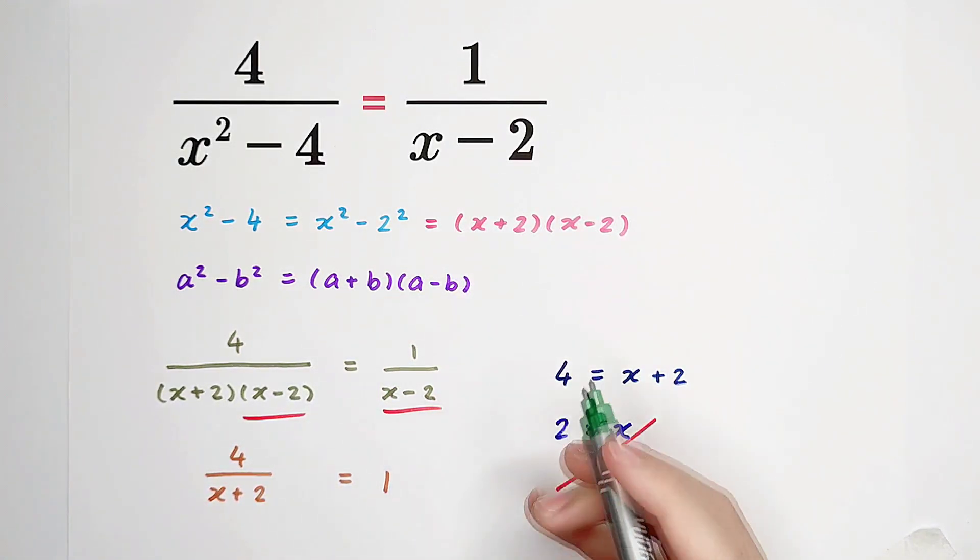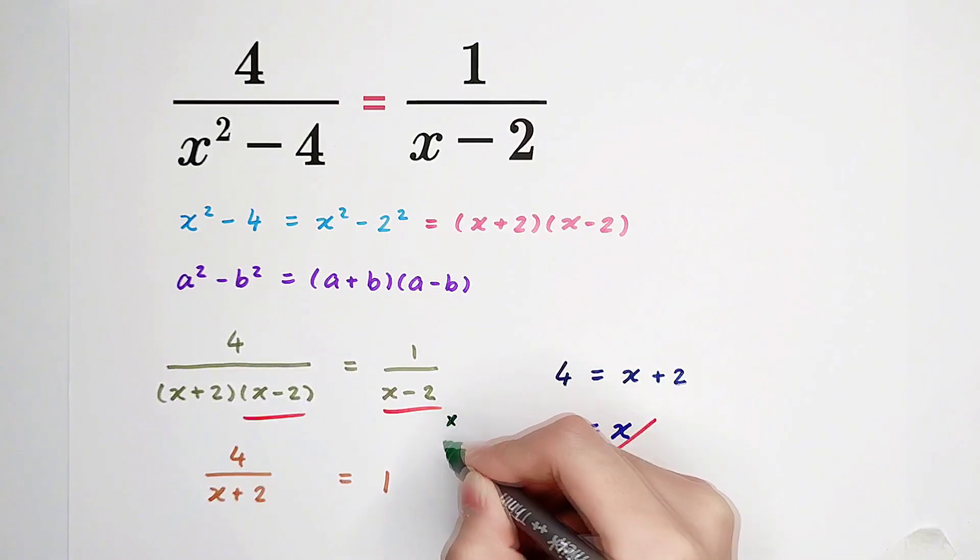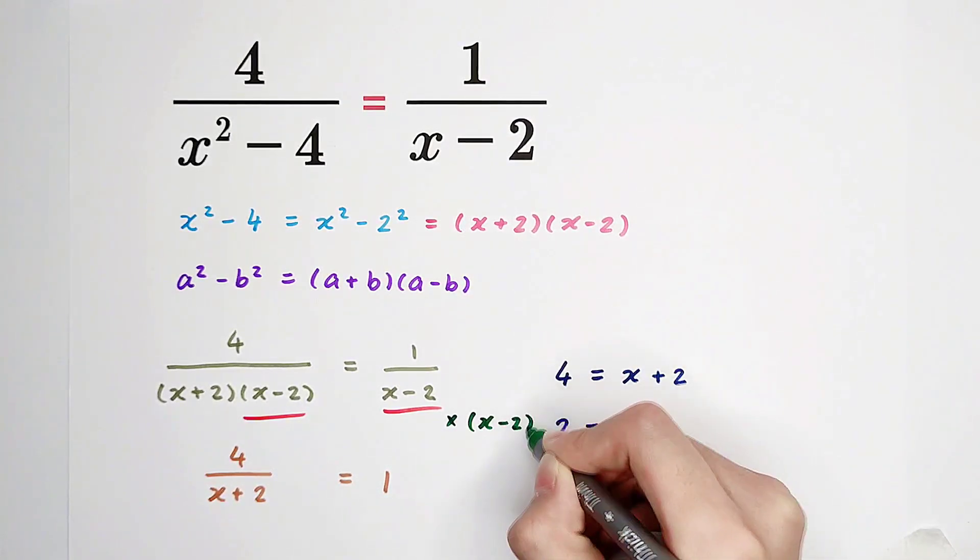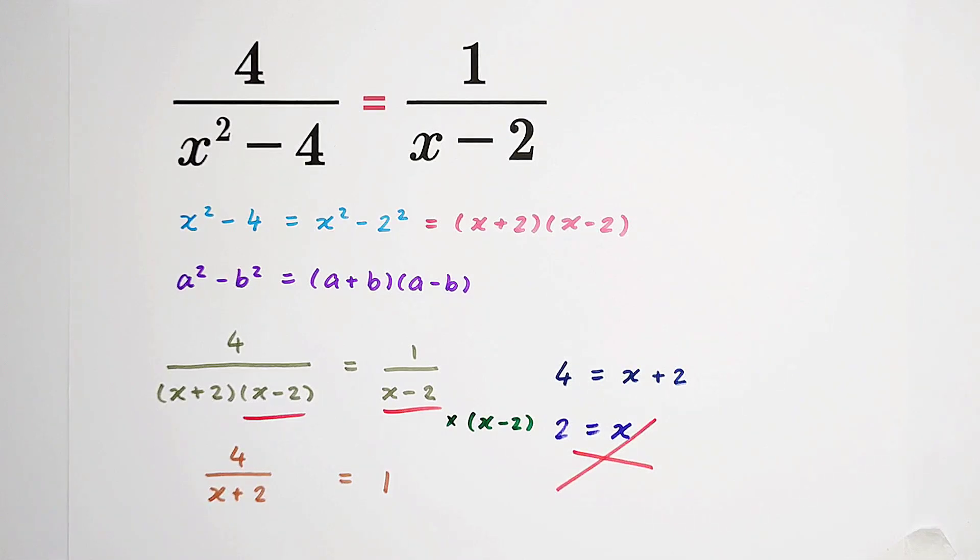Actually, here. We said we can multiply both sides by x minus 2, but under one condition: x minus 2 cannot be 0.